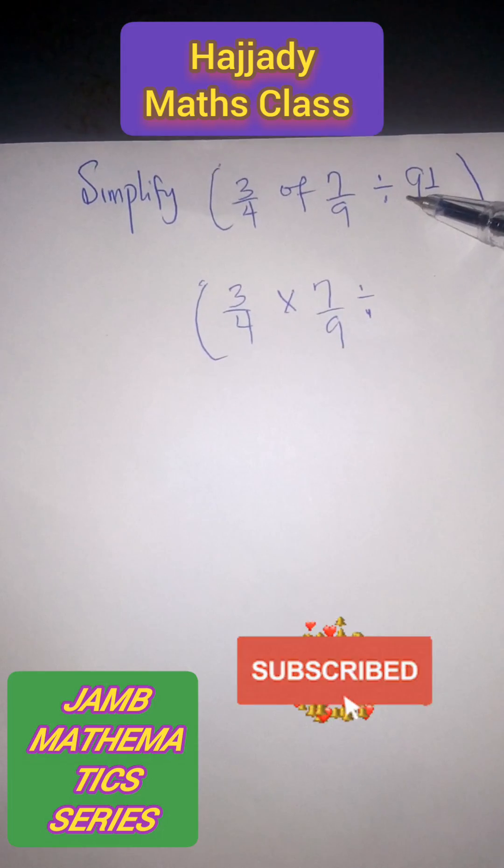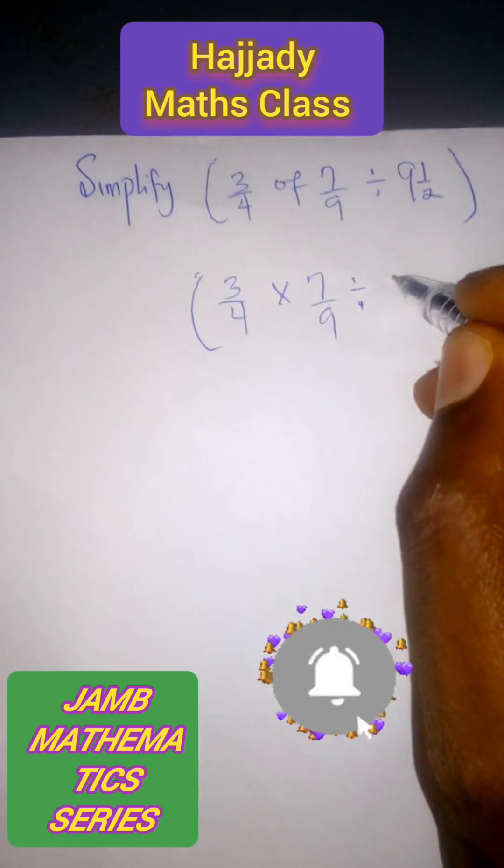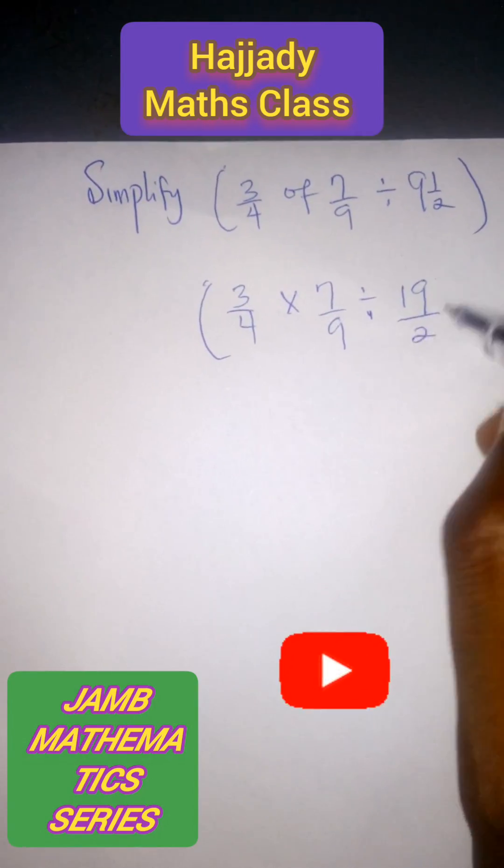We have 2 times 9 which is 18 plus 1. Here we have 19 over 2.